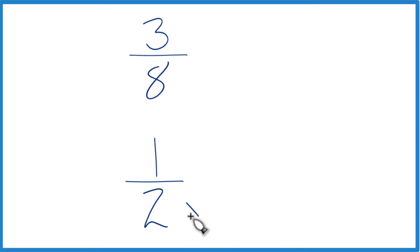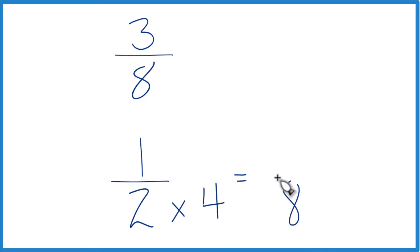So why don't we take 2 times 4? Because if I multiply 2 times 4, that gives me 8. Up here, I already have 8 in the denominator. I'm just going to keep that the same like that.